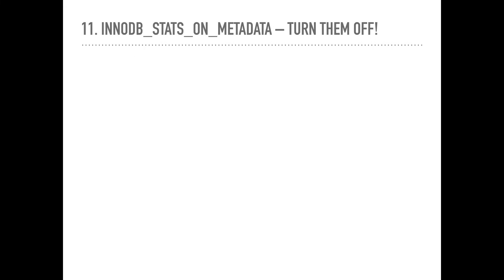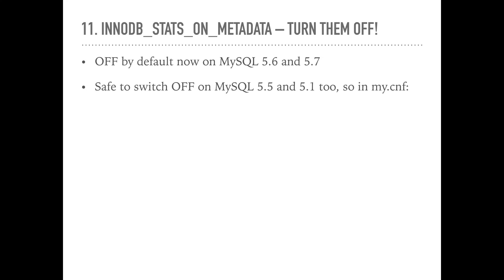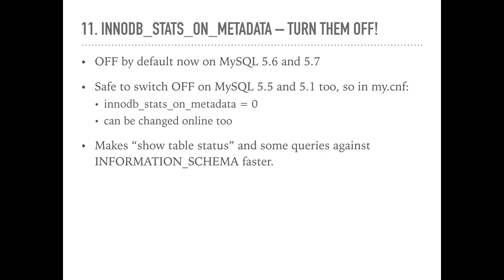InnoDB stats on metadata: if you're running MySQL 5.6 or 5.7 and you didn't change the default innodb_stats_on_metadata value, you're all set. On MySQL 5.5 or 5.1, however, I highly recommend turning this off. That way, commands like SHOW TABLE STATUS and queries against information_schema will be instantaneous instead of taking seconds to run and causing additional disk I/O. Starting with 5.1.32, this is a dynamic variable, so you don't need to restart MySQL just to disable it.